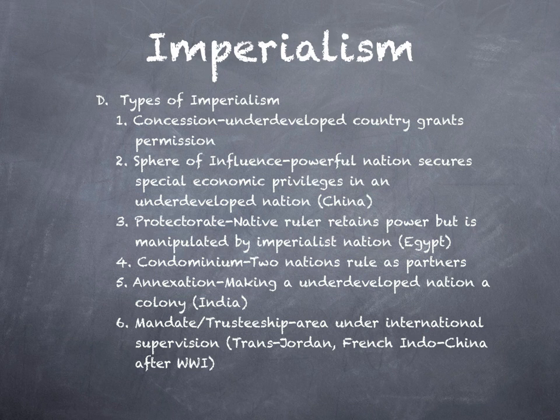Another form was a sphere of influence, where a powerful nation secured special economic privileges. The best example is China — several European countries had spheres of influence there. Great Britain had Hong Kong, where Britain didn't have to pay harbor fees or railroad taxes. British citizens had special treatment; if they committed crimes in Hong Kong, they were tried in an English court rather than a Chinese court. Spheres of influence were a popular way to create an empire without necessarily colonizing the area.